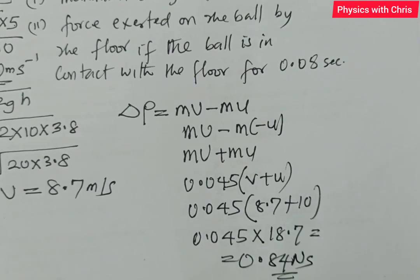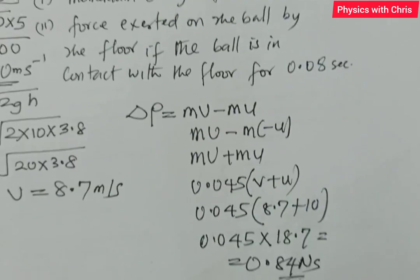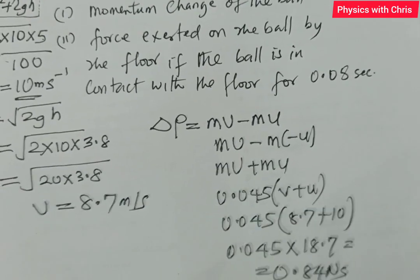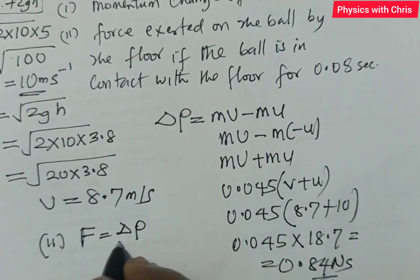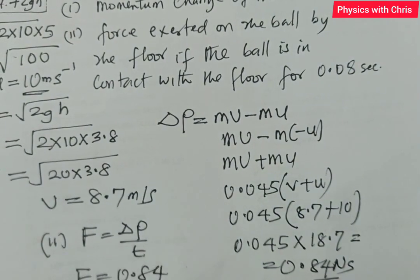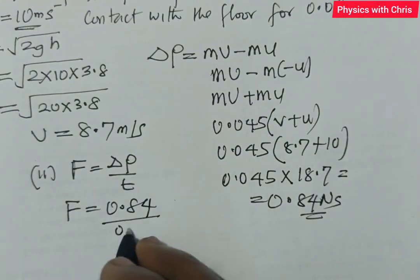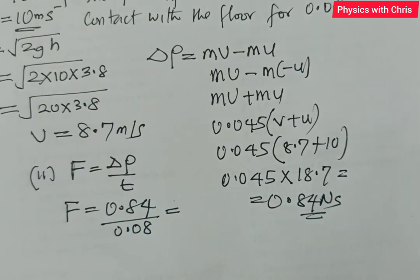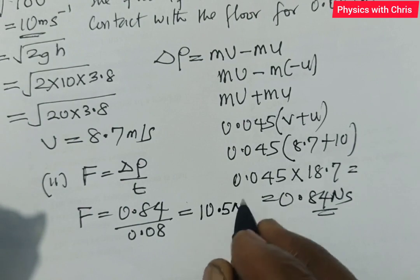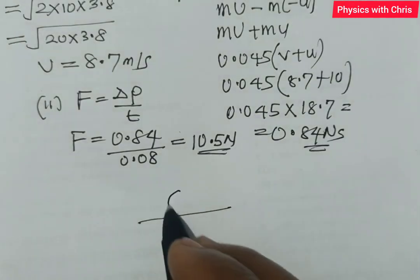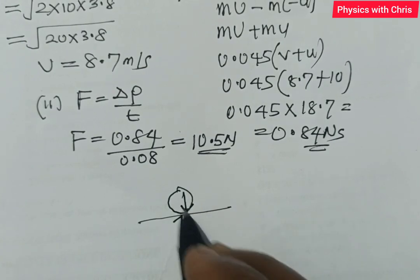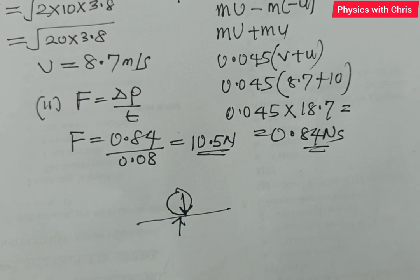The next question asks for the force exerted on the ball by the floor, given that the ball is in contact with the floor for 0.08 seconds. Force equals momentum change over time: F = 0.84 / 0.08 = 10.5 N. That is the force exerted on the ball by the surface, which is equal and opposite to the force the ball exerts on the surface — from Newton's third law of motion: action and reaction are equal and opposite. In the next video we'll see more questions of this type.